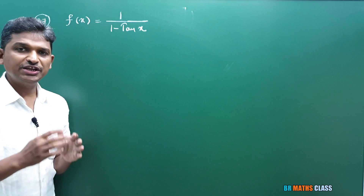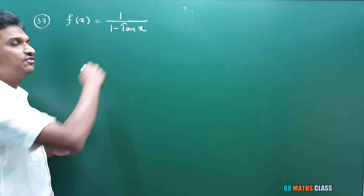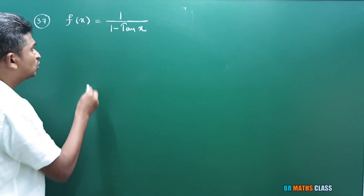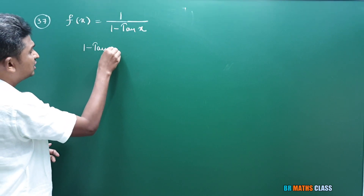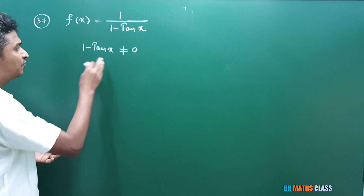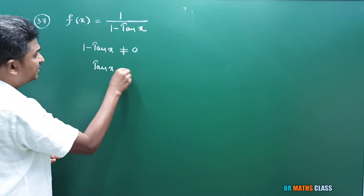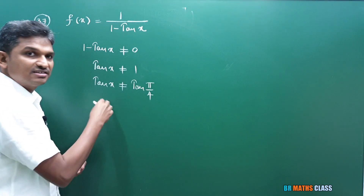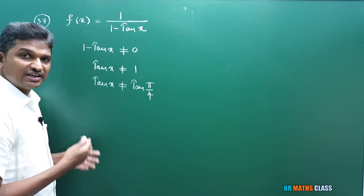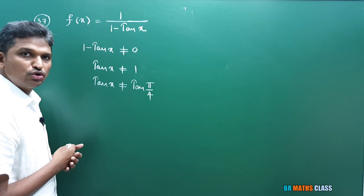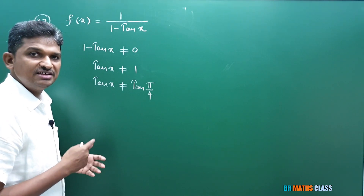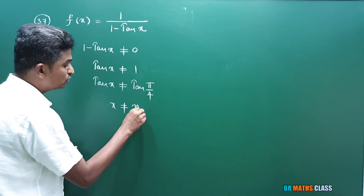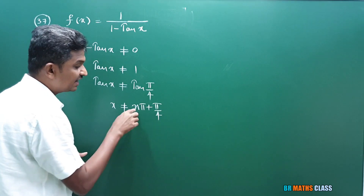Observe question number 37. We need to find the domain of f(x) = 1/(1 − tan x). This is of the form f(x)/g(x), so the denominator cannot be equal to 0. So 1 − tan x ≠ 0, which means tan x cannot be equal to 1. Tan x = 1 can be written as tan(π/4), so tan x ≠ tan(π/4).